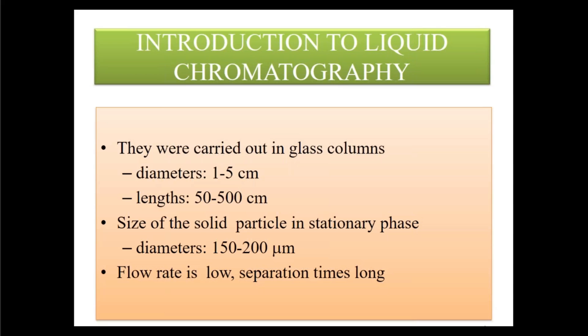These separations are carried out in glass columns with diameters of 1 to 5 centimeters — this is where a key difference with HPLC will be seen. The column length is around 50 to 500 centimeters. The particle diameter of the solid stationary phase is 150 to 200 micrometers. Because of this large particle size, the flow rate is low and separation time therefore takes much longer.